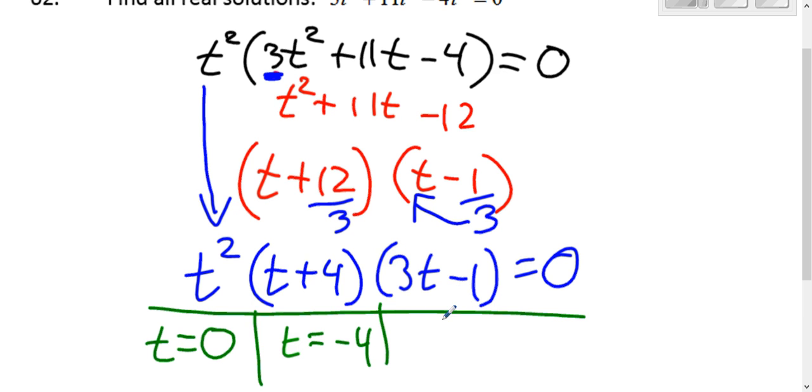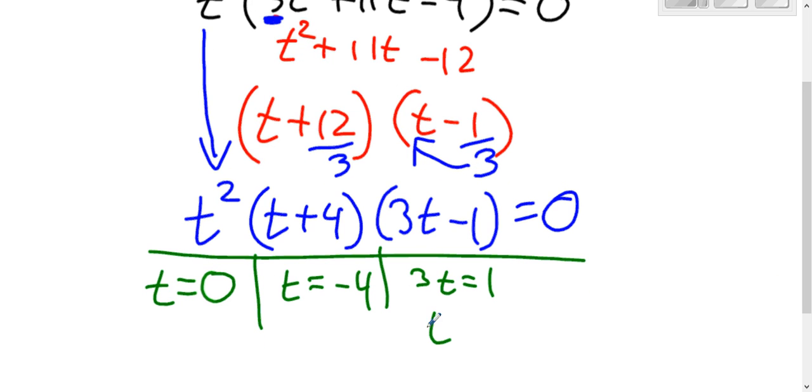And then set 3t minus 1 equal to 0, and you get 3t equals 1. So, t equals 1 third.